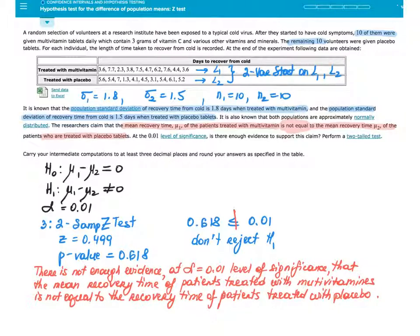That 'not equal to' tells me it is a two-tail test, and 'not equal to' will appear in the alternative hypothesis. One important thing to note is that we can assume the populations are normally distributed, which is critical here with such a small sample — I couldn't perform the Z-test otherwise. Setting up our hypothesis statements: the alternative hypothesis says μ₁ minus μ₂ is not 0, and the null hypothesis says μ₁ minus μ₂ equals 0.